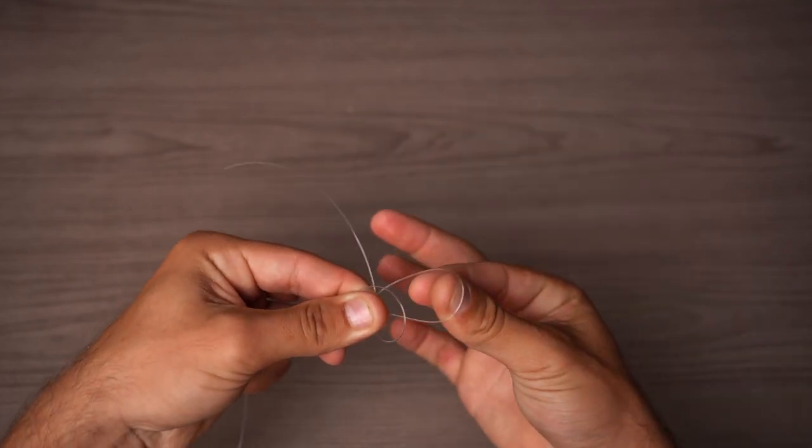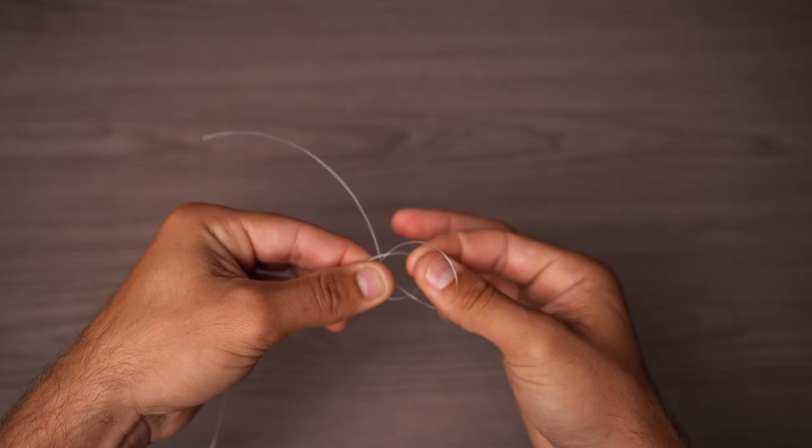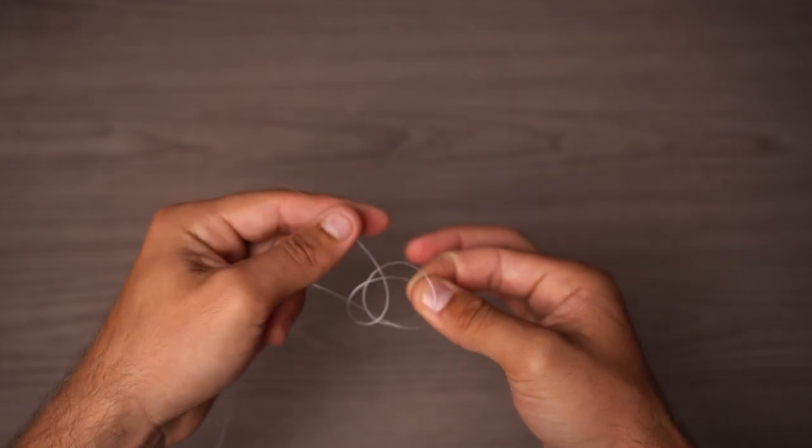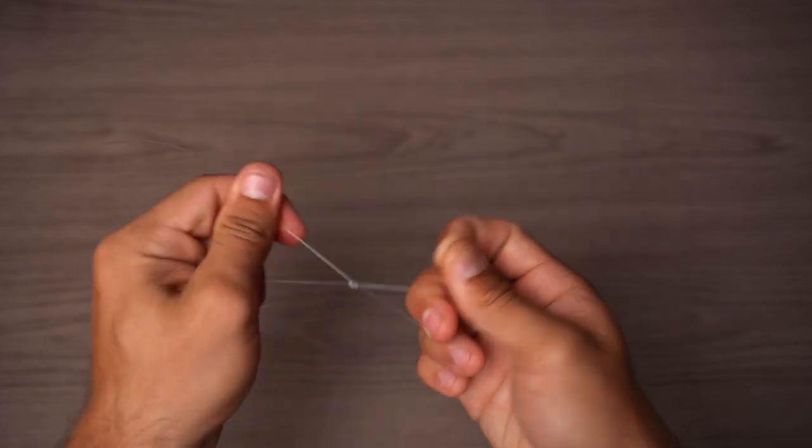We're going to come from behind that first loop that we made, pinch the second loop we made, and bring it through that first loop. And then that's going to be the done knot.